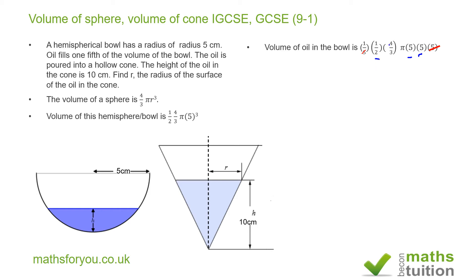Divide the four by two to get two, and divide the two in the denominator by two to get one. So we have 25 times two which gives us 50, and we still have π and three in the denominator. So the volume of the oil is 50π divided by three.